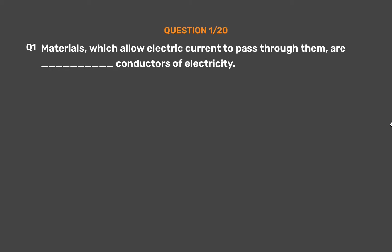Question No. 1: Materials which allow electric current to pass through them are underscore conductors of electricity. Option A: Good. Option B: Bad.